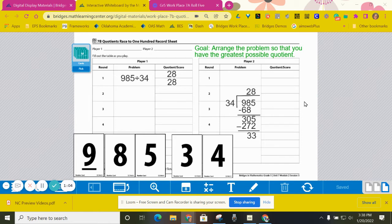I have shown you five cards that could have been drawn for this player. In trying to get to the largest possible quotient, I decided to arrange the five cards like this, so that I have 985 divided by 34.